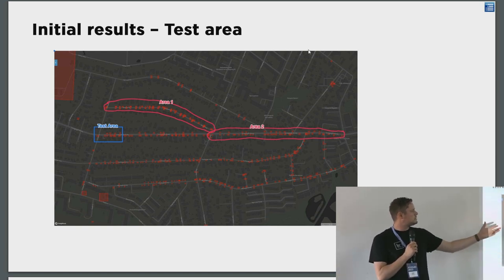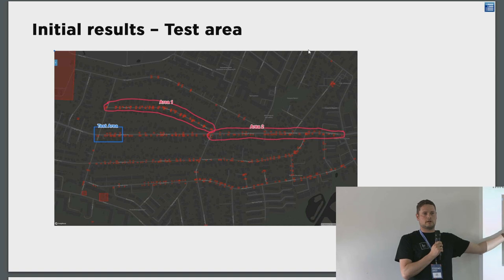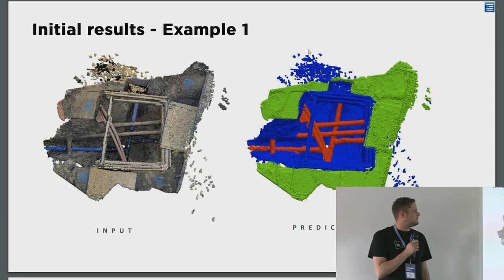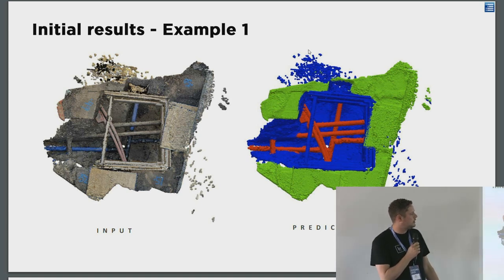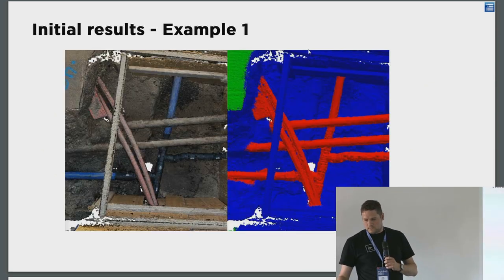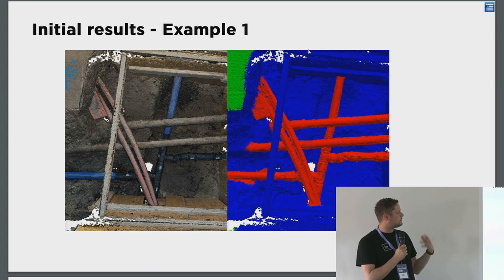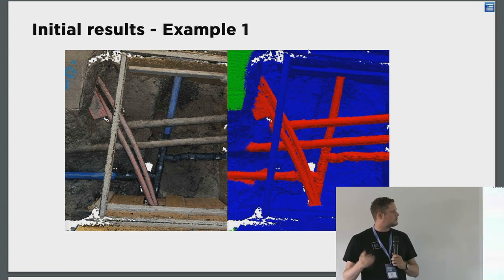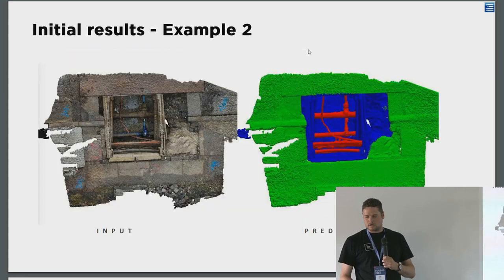The markings show open trench point clouds in areas one and two. The test area was relatively close to the training data, so it shares a lot of similarities. With just the 300 annotated point clouds, we got some pretty good results — you can see the input and the predictions. One initial struggle was the wooden supporting beams in the trench: the model thought they were pipes. But as we approached 300 point clouds, it got better at distinguishing between these features.